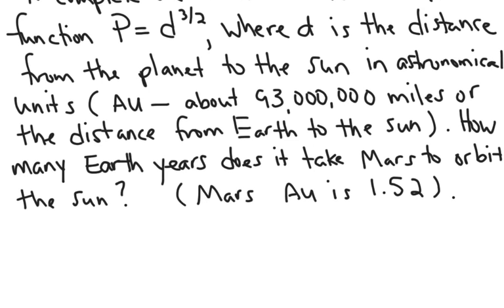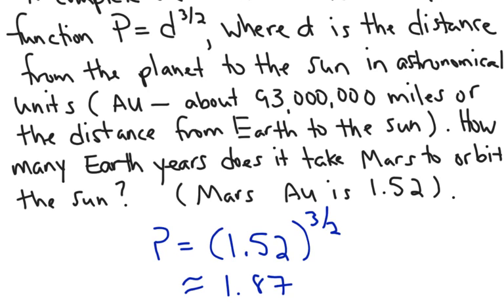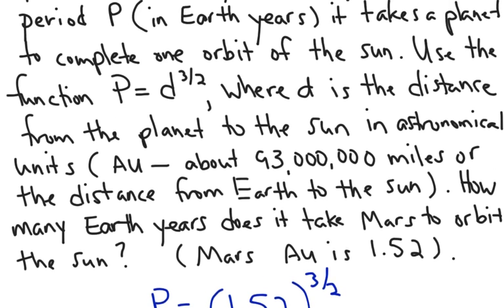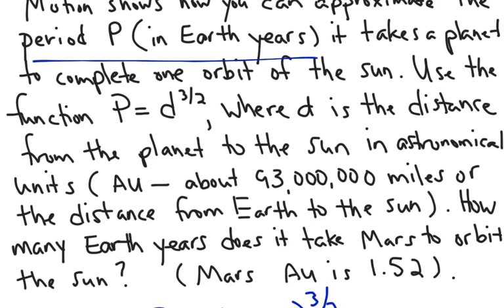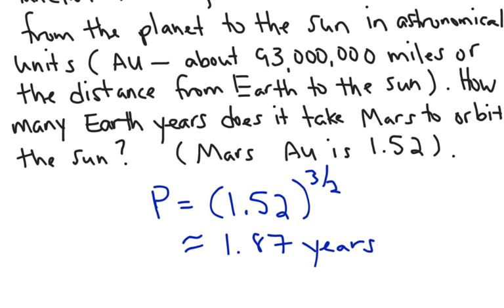Well, all we have to do is plug 1.52 in for d into that equation, because we just said that d is the distance in astronomical units. Well, now all you have to do is plug this into your calculator. Remember to raise to the 3 halves power. If you don't have the new operating system, then the 3 halves power has to go into parentheses. And you should find out that it's about 1.87. Now, let's go back and determine what were the units for p. Well, the units for p was in Earth years.